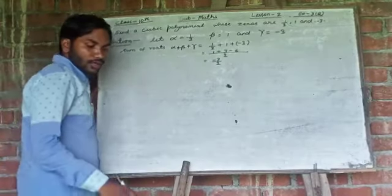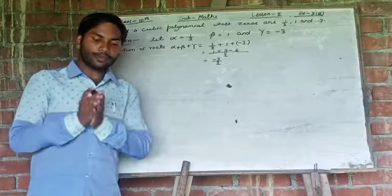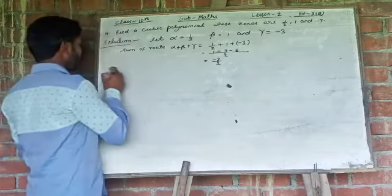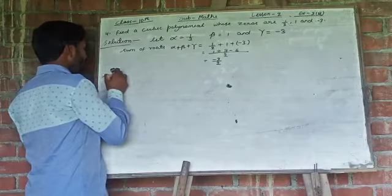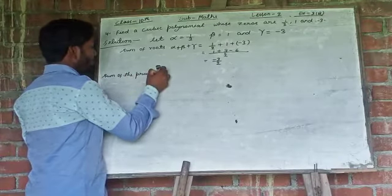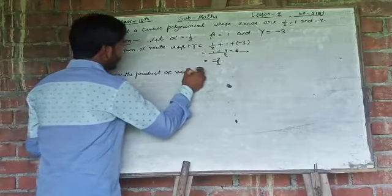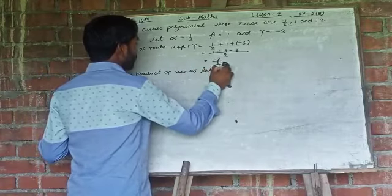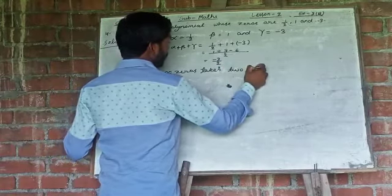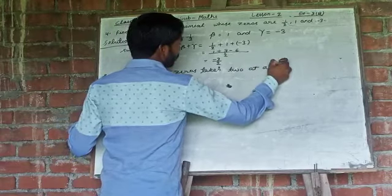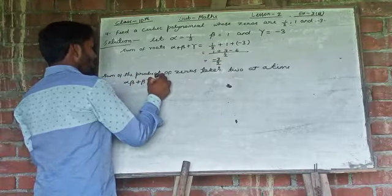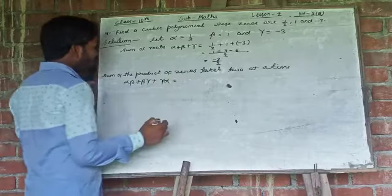Again, sum of the product of the zeros, taken 2 at a time. Now, sum of the product of zeros, taken 2 at a time means alpha beta plus beta gamma plus gamma alpha.